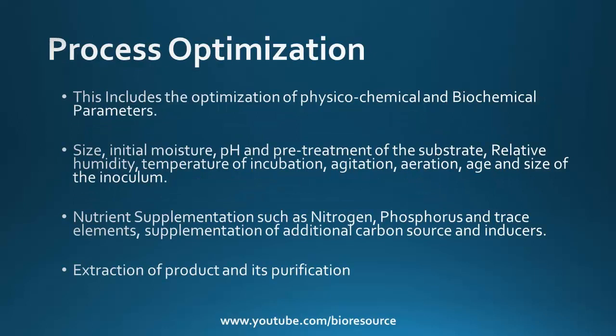Process optimization includes the optimization of physicochemical and biochemical parameters. These include size, initial moisture, pH, and pre-treatment of the substrate. Other factors include relative humidity, temperature of incubation, agitation, aeration, and age and size of the inoculum. Additional parameters include nutrient supplementation such as nitrogen, phosphorus, and trace elements, as well as supplementation of additional carbon sources and inducers.